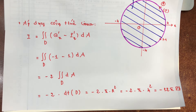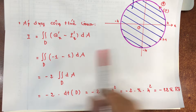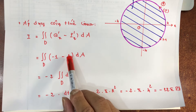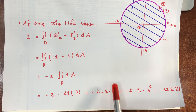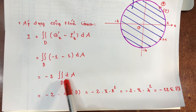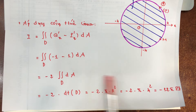Các anh chị thấy rằng đối với bài này, việc áp dụng công thức Green giúp tính rất ngắn gọn. Điều đặc biệt là xuất hiện tích phân kép trên miền D của dA — chính là diện tích — giúp đơn giản hóa tính toán.